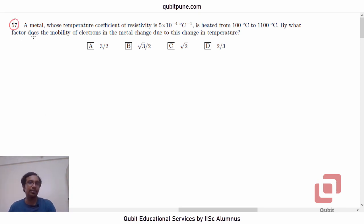This MCQ is based on the chapter current electricity from 12th physics. A metal whose temperature coefficient of resistivity is 5 times 10 to the power negative 4 per degrees Celsius is heated from 100 degrees Celsius to 1100 degrees Celsius. By what factor does the mobility of the electrons in the metal change due to this change in temperature? The options are: 3 by 2, root 3 by 2, root 2, and 2 by 3.